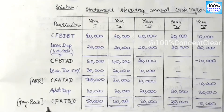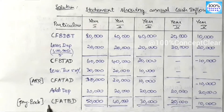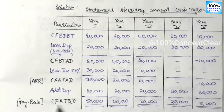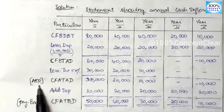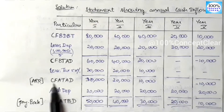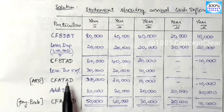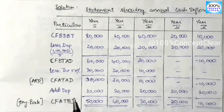The capital budgeting methods include payback period, NPV, profitability index, IRR method, and discounted payback period — all calculated using cash flow after tax and before depreciation. The ARR method, which is the accounting rate of return, uses cash flow after tax and after depreciation.